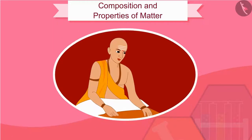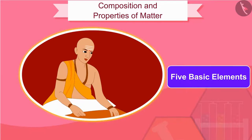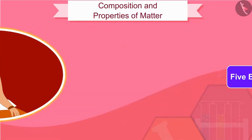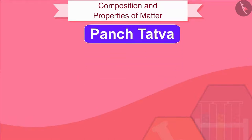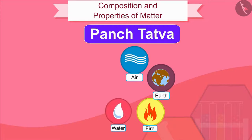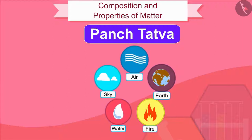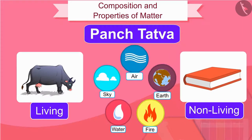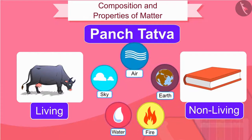Early Indian philosophers classified matter in the form of five basic elements which we know as Panchatattva. These are the five elements: air, earth, fire, water and sky. According to them, everything living or non-living was made up of these five basic elements.